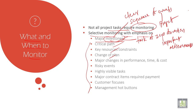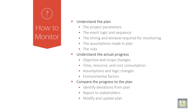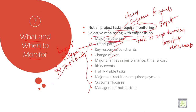Then critical path. Critical path is the longest distance between the start and finish of your project. It includes all the tasks' duration. It also gives a clear picture about the project and the actual schedule.